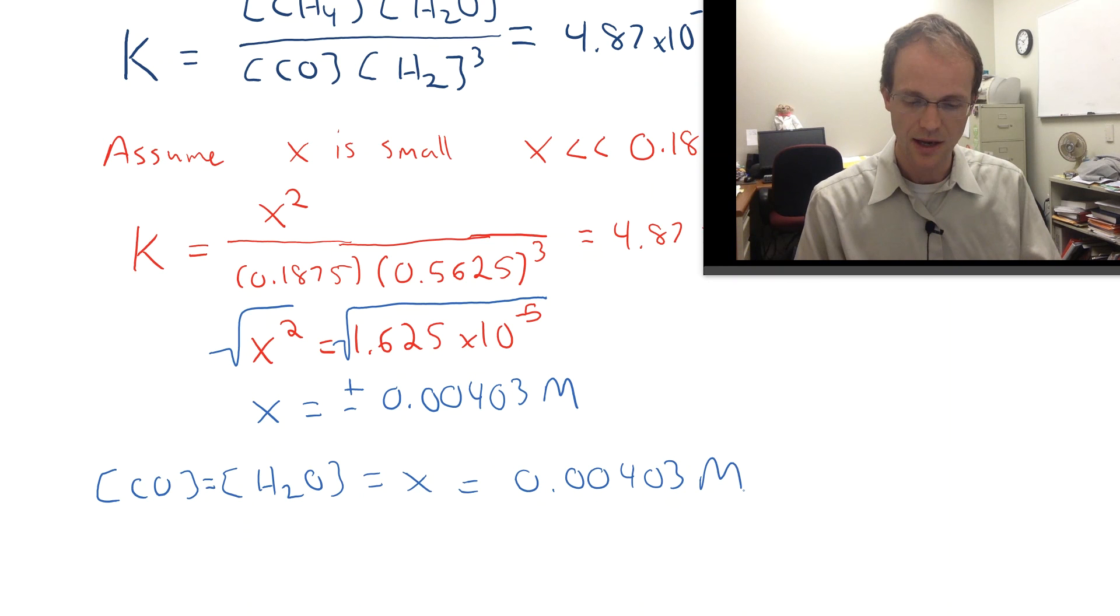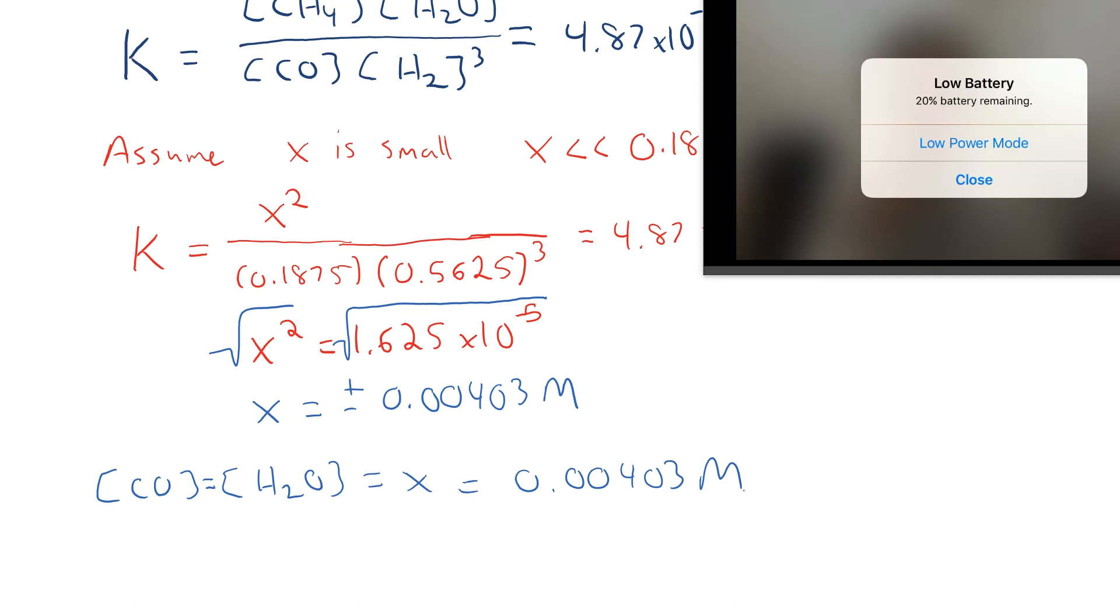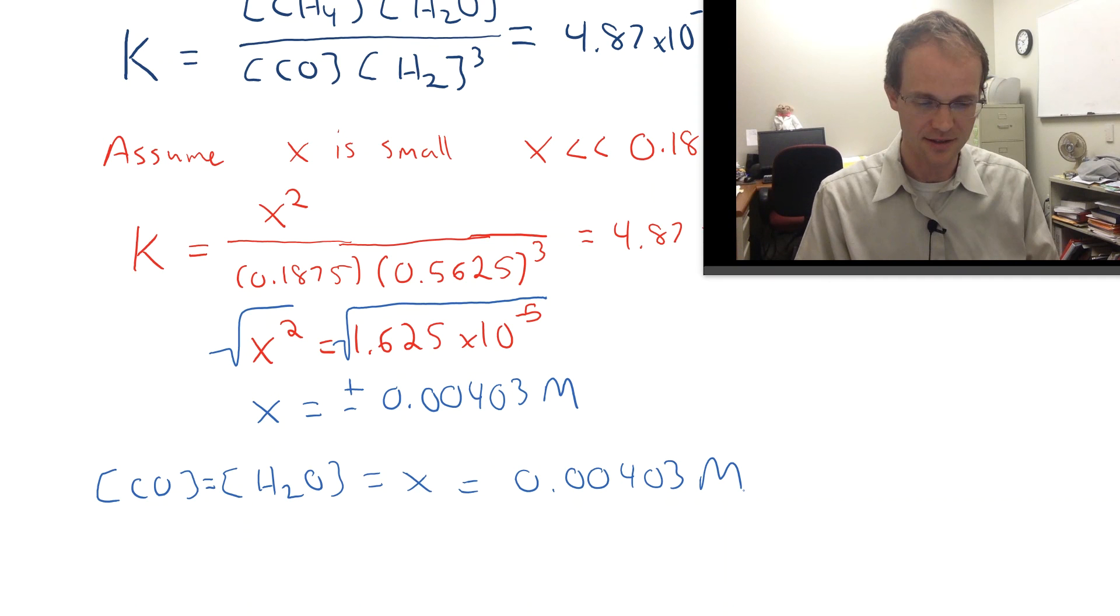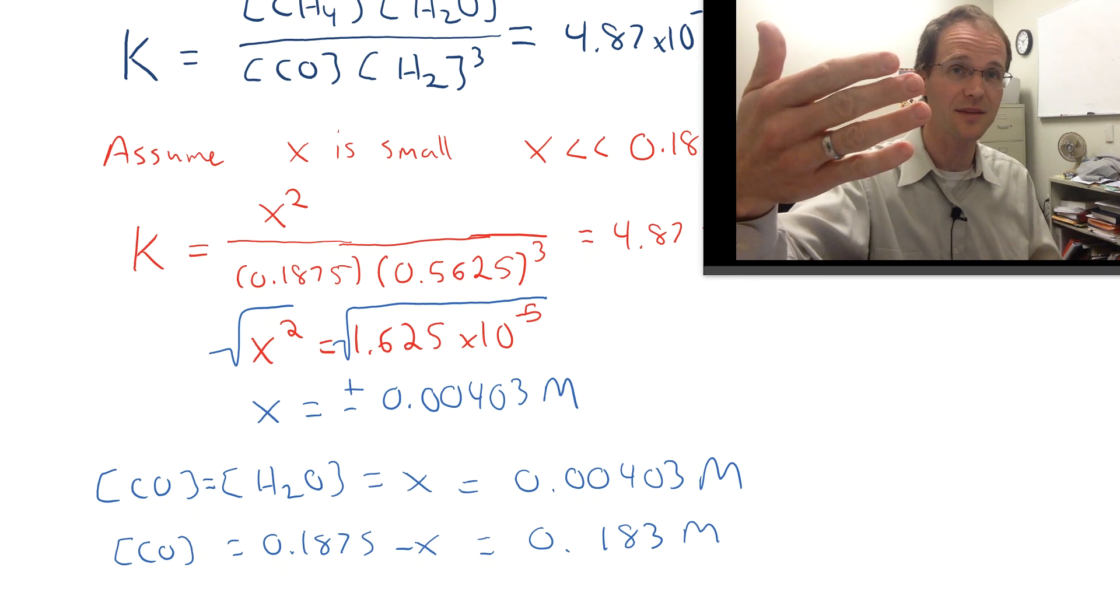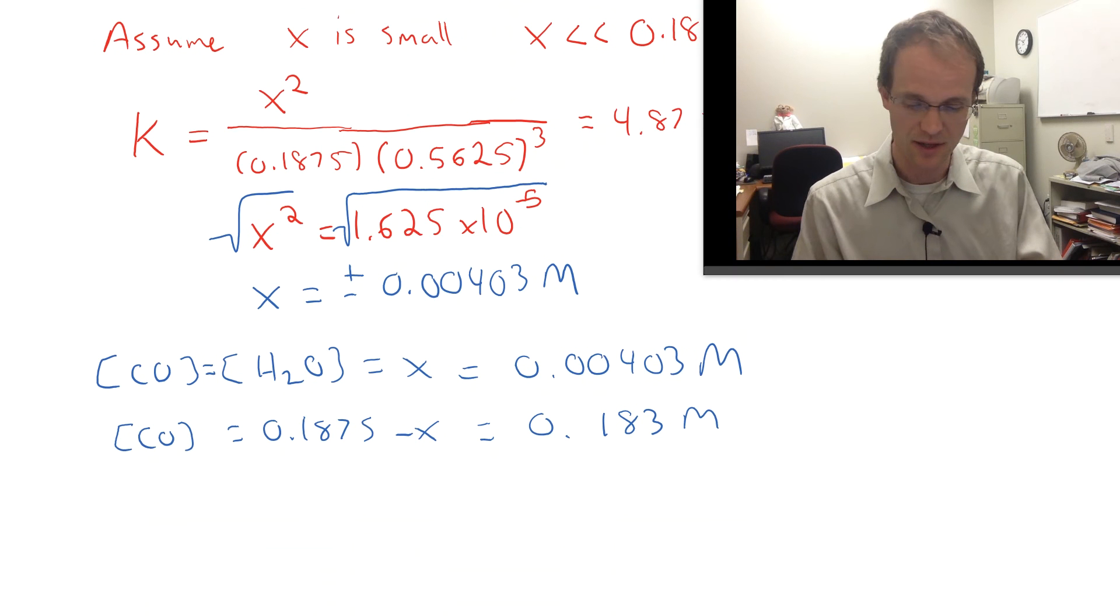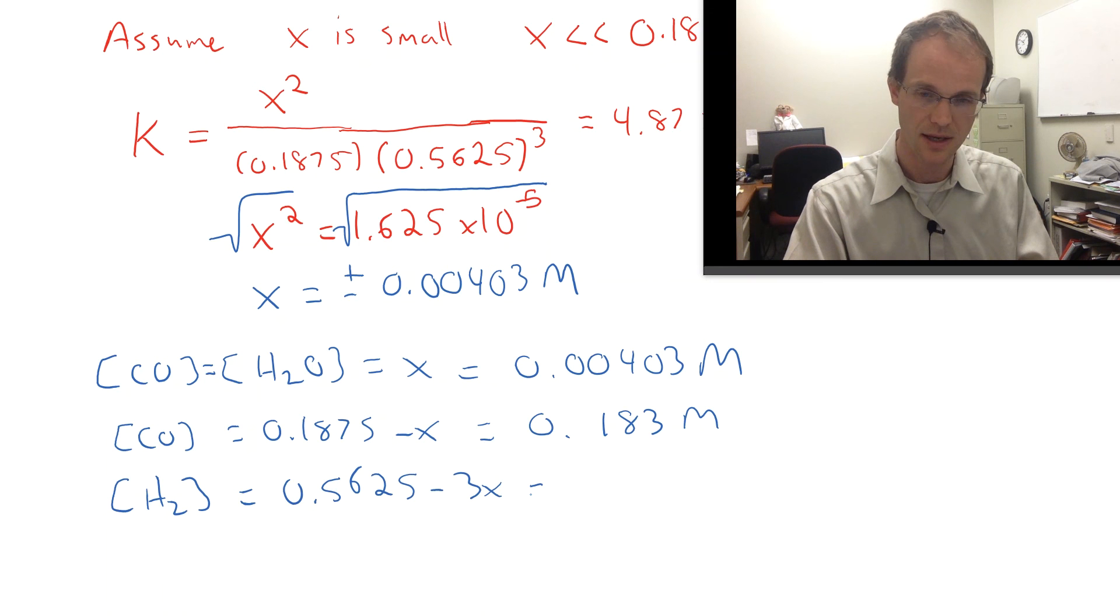What about the other two? We have to figure those out. We have some math for them. We knew that the concentration of CO was 0.1875 minus X, and if you do that, that's 0.183 molar. That's right, it didn't change the value of CO very much, which is what we assumed back at the beginning. Now we really want to quantify that assumption and make sure it's correct. Let me calculate this other one. The concentration of H2 is going to be 0.5625 minus 3X, and if you do that, you get 0.550 molar. Again, not a big change.